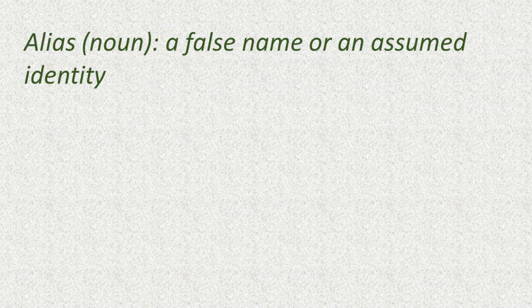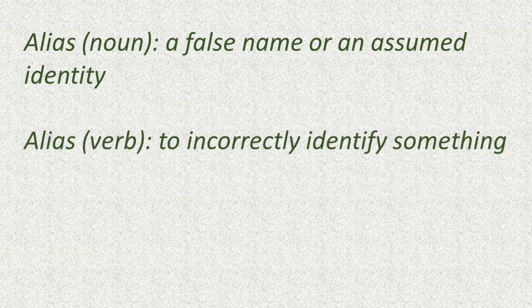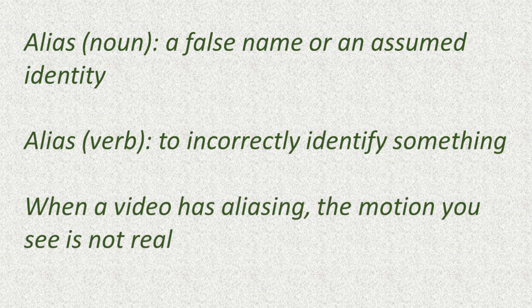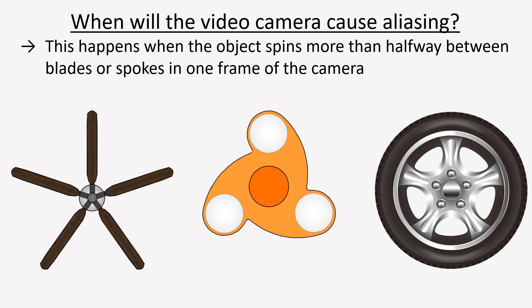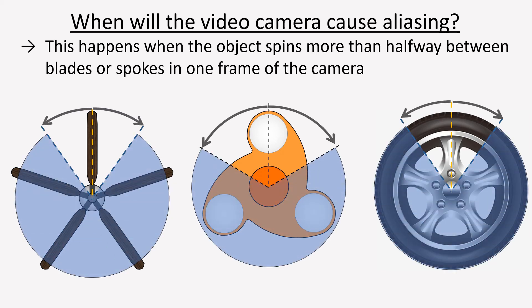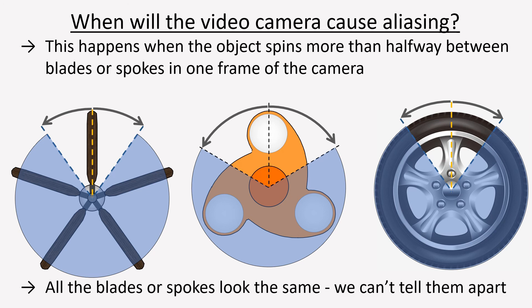The scientific term for what is happening is aliasing. You might know that an alias is a different name that someone uses, but in science, aliasing means that something is incorrectly identified as something else — like a fan or a fidget spinner that looks like it's standing still. Aliasing happens in a video when the frame rate of the camera is too slow to follow all the action. For something that spins like a fan, a fidget spinner, or a car wheel, aliasing happens if the object spins more than halfway between two blades or two spokes from one frame to the next. If it spins fast enough that the blade or spoke moves from the top into the shaded region in one frame, the video has aliasing — in other words, the video will not show what is really happening.